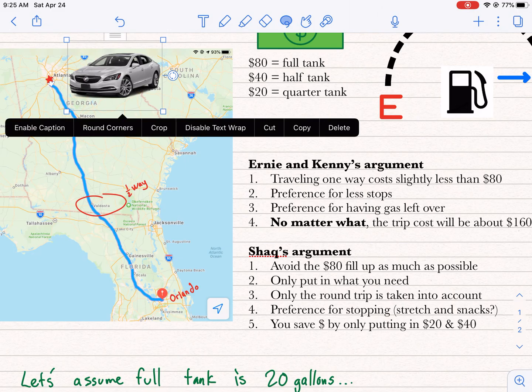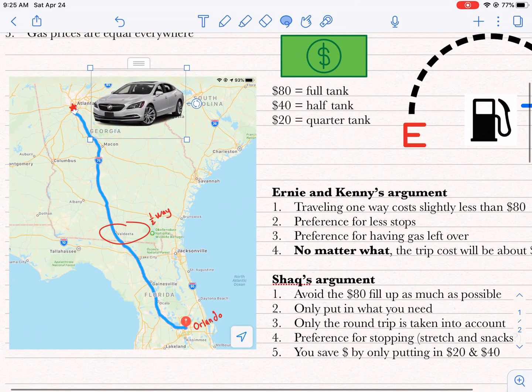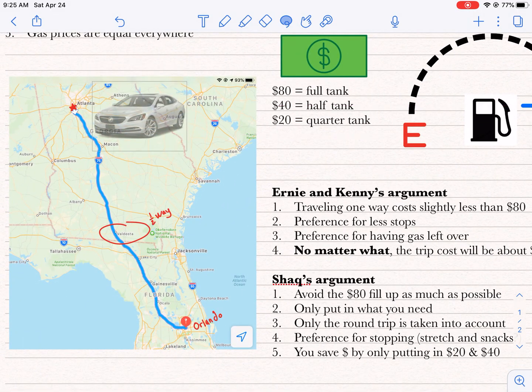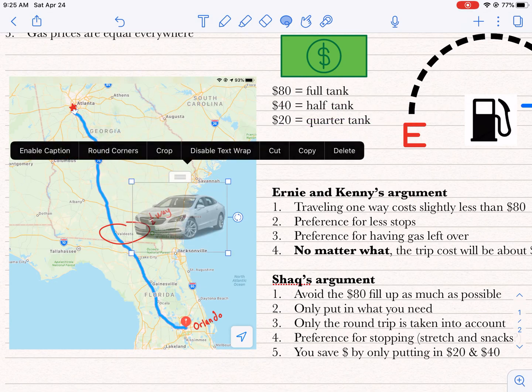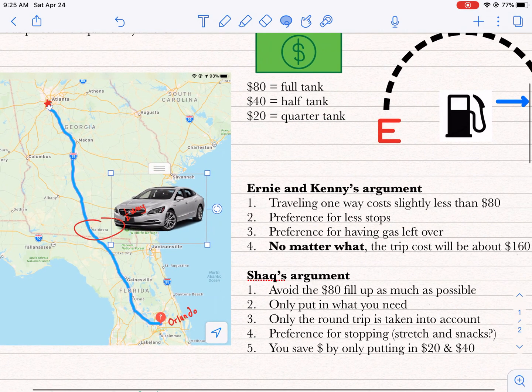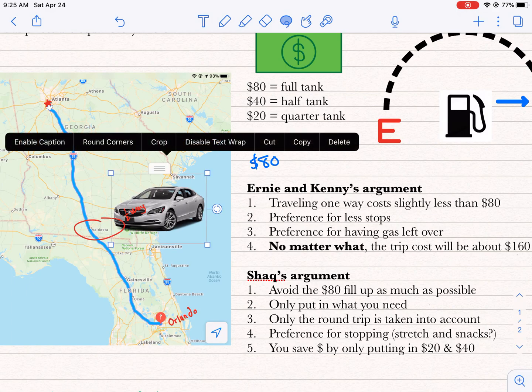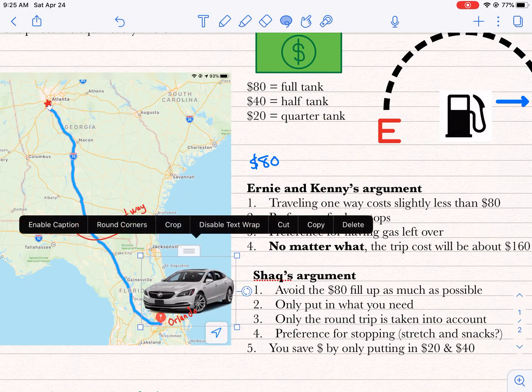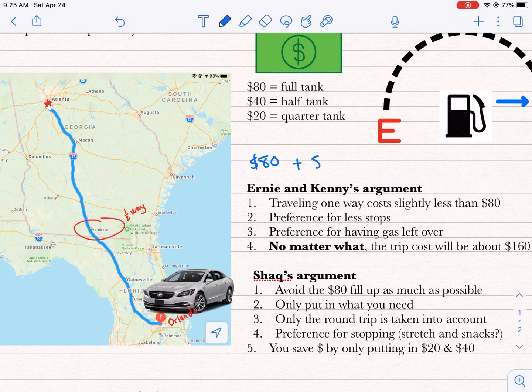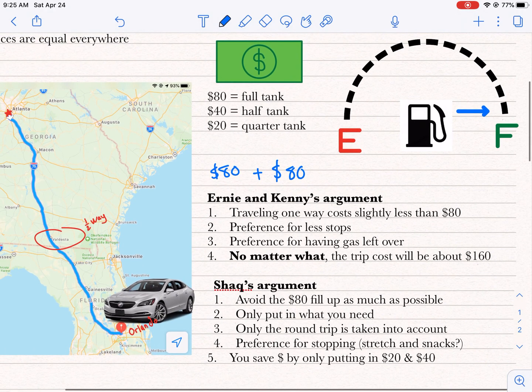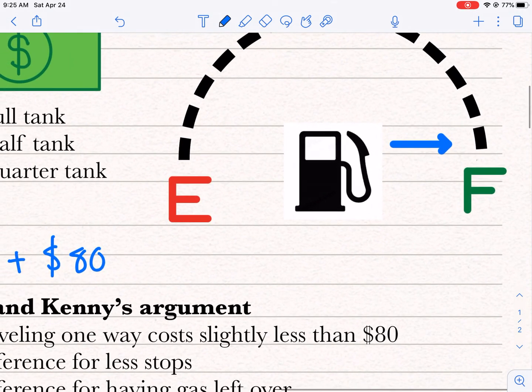Now let's break that down in terms of their argument. You go from Atlanta to Valdosta, that's halfway, and you spent about $40. If you filled up the tank at first, both parties were arguing that you start off with $80. So you get to halfway, you have spent half your gas, and then you get to Orlando, and you're basically on empty.